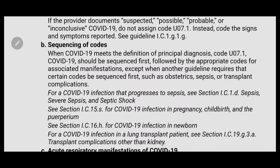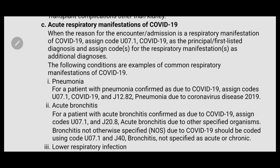For sequencing of COVID-19 codes: U07.1 will be the primary code whenever the patient presents with any COVID-related conditions. COVID-19 meets the definition of principal diagnosis. Code U07.1 should be sequenced first, followed by appropriate codes for associated manifestations.